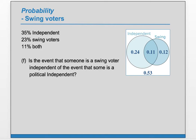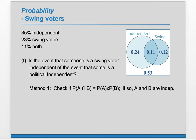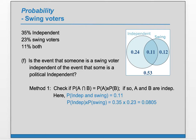Part F: is the event that someone is a swing voter independent of the event that someone is a political independent? Two events A and B are independent if P(A and B) equals P(A) times P(B). Here, P(independent and swing) is 0.11, while P(independent) times P(swing) is 0.35 times 0.23, which equals 0.0805. These are not equal, therefore they are not independent — they are dependent.